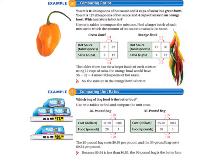So if we look at our green bowl mixture, our hot sauce began at 8 tablespoons and our salsa was at 3 cups and then we multiplied by 4 to get 32 tablespoons of hot sauce and 12 cups of salsa.